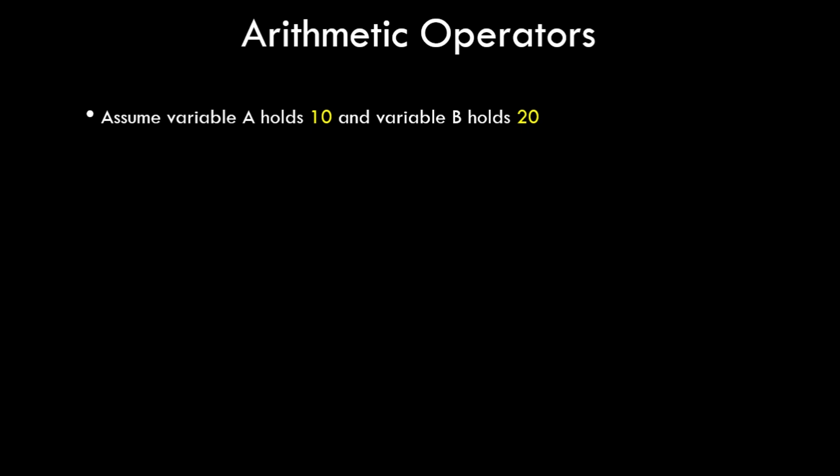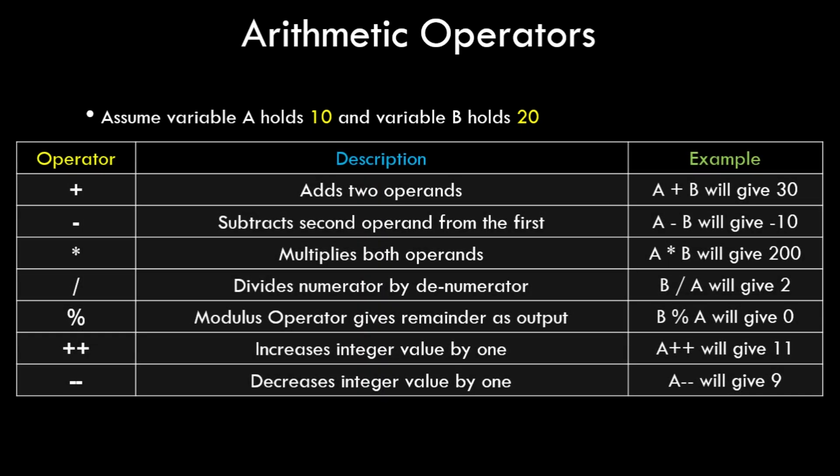Let's assume variable a holds value 10 and variable b holds value 20. The arithmetic operators include: addition (a + b = 30), subtraction, multiplication, and division. The subtraction operator subtracts one variable from another, the multiplication operator multiplies two operands, and the division operator performs division where the numerator is divided by the denominator.